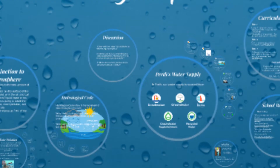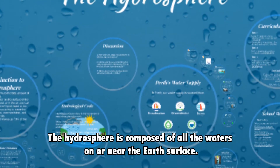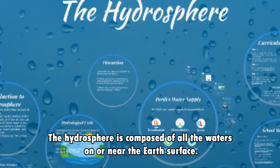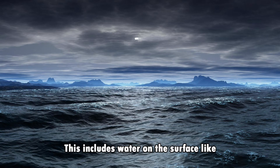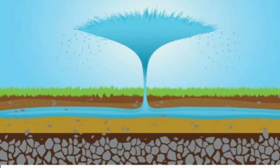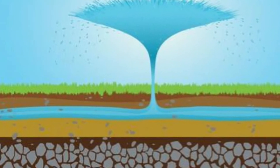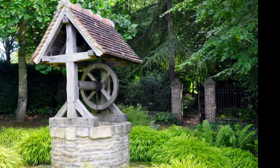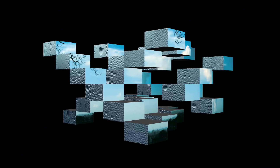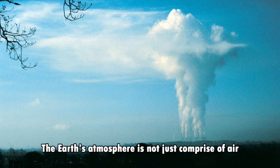As a review, the hydrosphere is composed of all the waters on or near the earth's surface. This includes water on the surface like oceans, rivers, and lakes. It may also be the water underground in wells and aquifers, and may exist as moisture in the air, visible as clouds and water vapor.